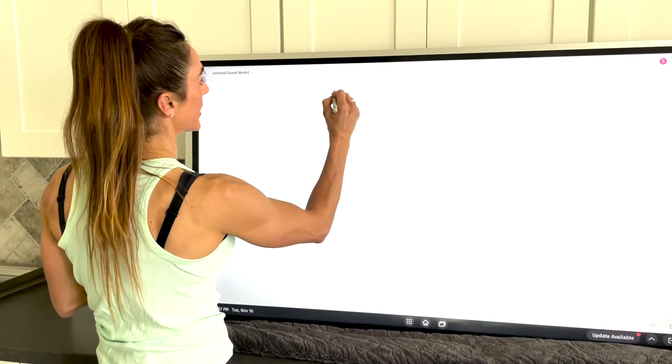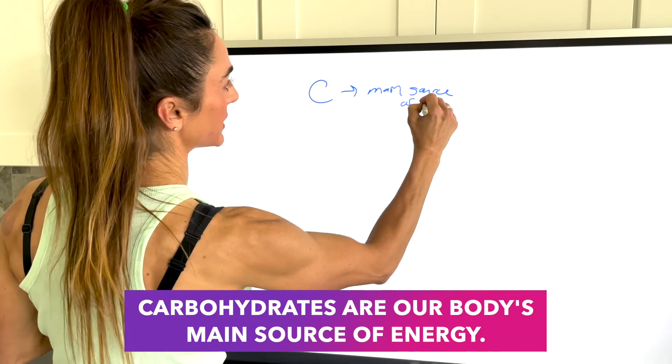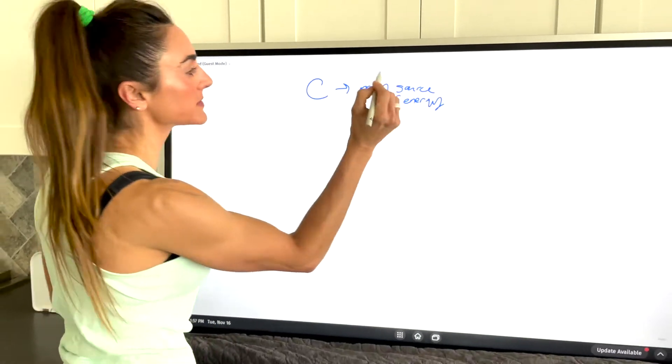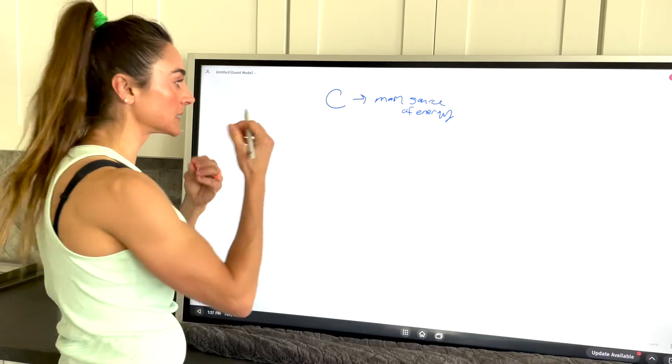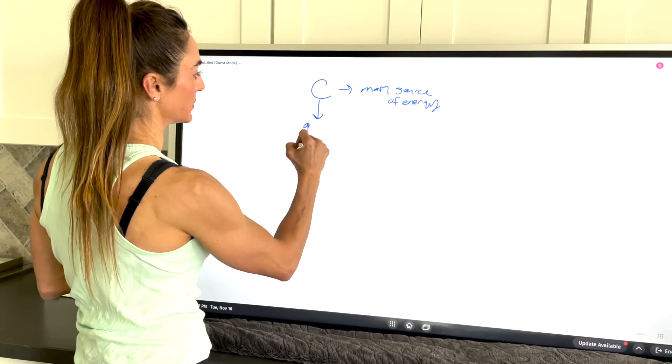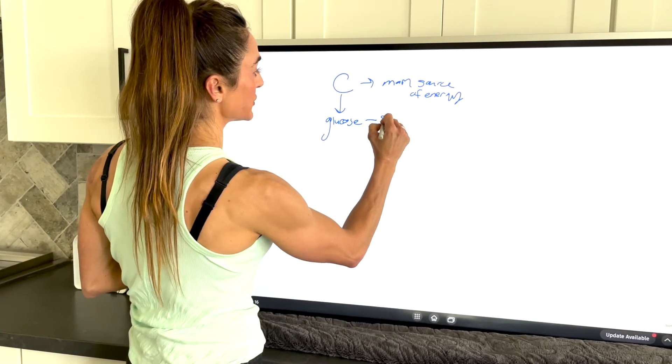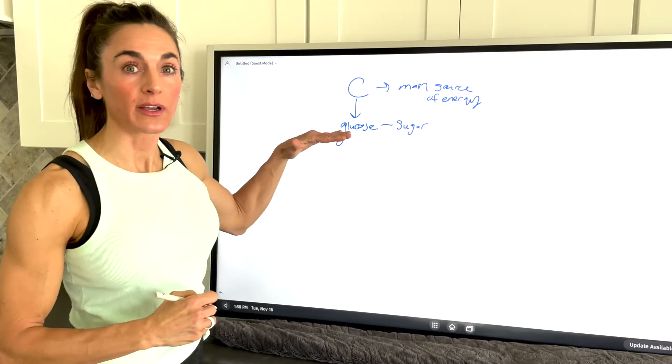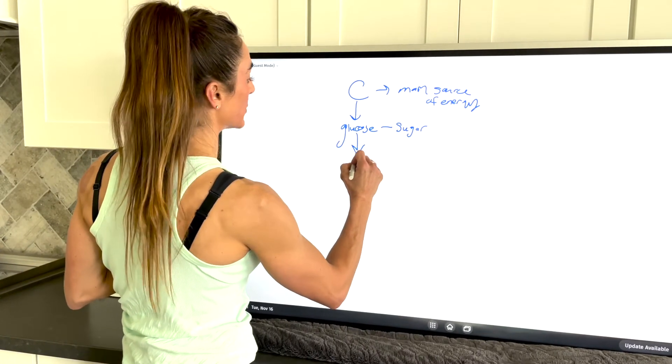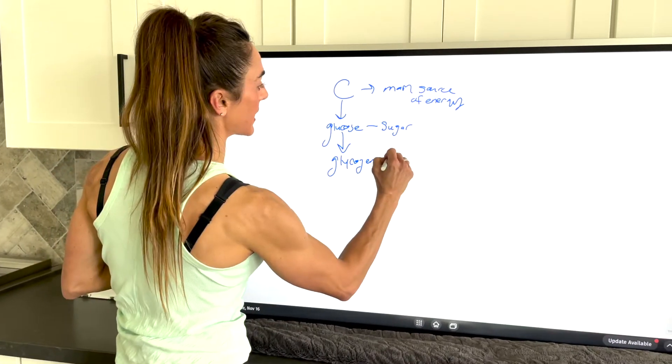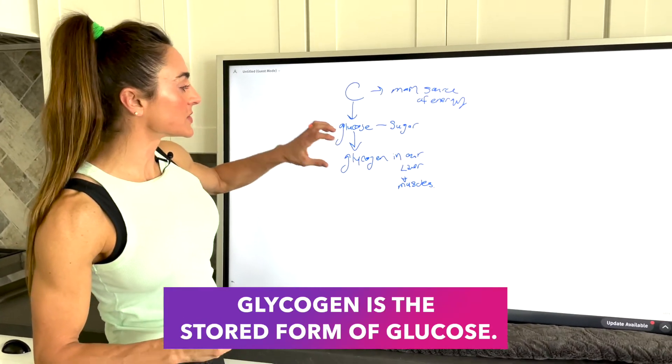So the first thing that we need to understand is what carbohydrates are doing to our body. We have our carbohydrates, this is our body's main source of energy. Our body thrives off of carbohydrates. When we eat, the food gets broken down into glucose. Glucose is a sugar. We use this sugar as energy and whatever we don't use right away, our body will store in the form of glycogen in our liver and our muscles.